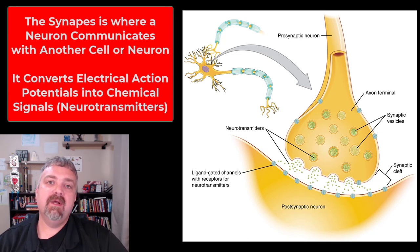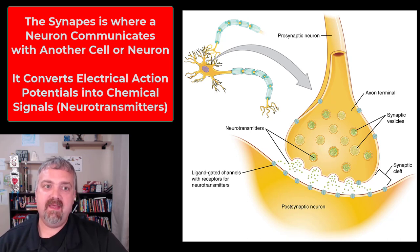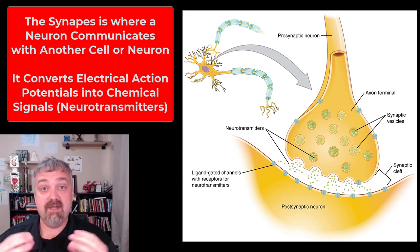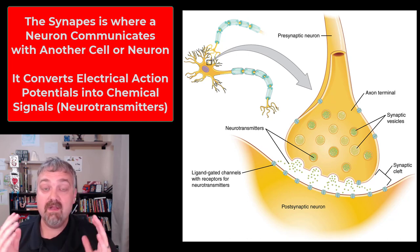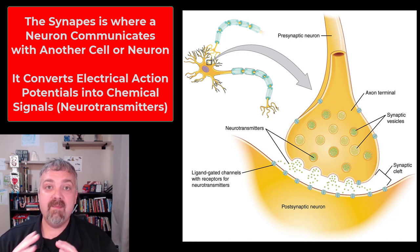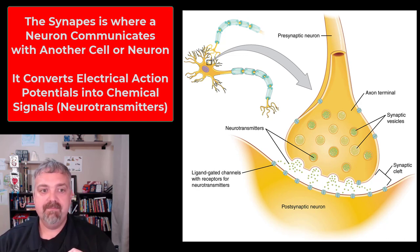Hey everybody, Dr. O here. In this video, we're going to cover the basic structure and function of the synapse. We've covered the rest of the neuron — now we're at the end where the electrical signal usually becomes a chemical signal. There are actually two types of connections between electrically active cells: electrical synapses and chemical synapses. We're going to focus on chemical synapses because they are by far more common and more important.